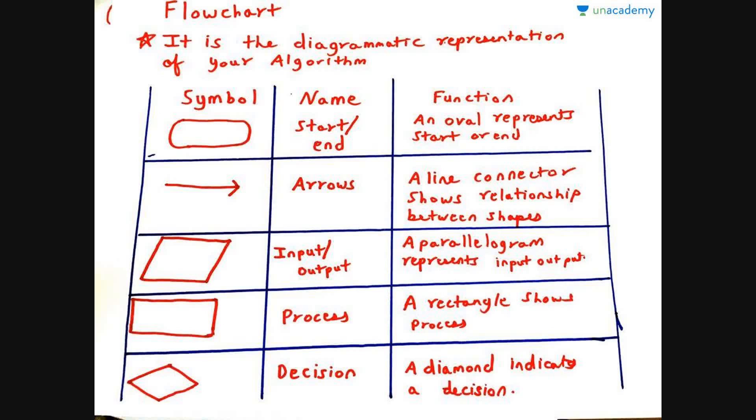Now let's move to flowchart. What is a flowchart? It is a diagrammatic representation of algorithm. As we wrote the algorithm, it was basically English involved in it. But as I said, diagrams are more easier to remember and understand. So the flowcharts have been designed. Each symbol has a specific name and a specific function as shown. An oval which has the name start or the end and its function is to represent the start or the end. Arrows are the line connectors which shows the relationship between the shapes. Then input output are represented by parallelograms. Process is represented by a rectangle and decision by a diamond.